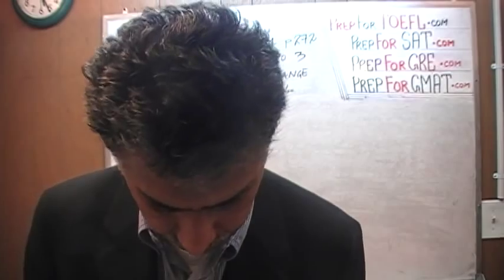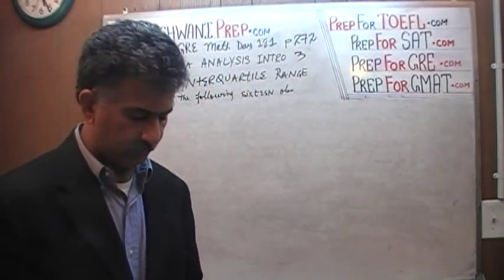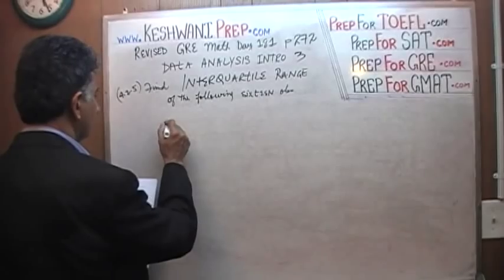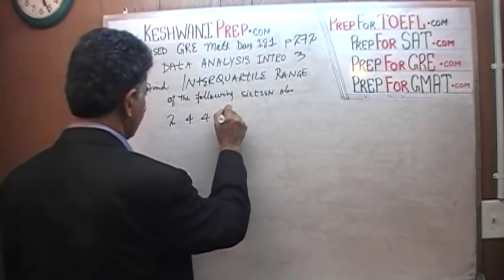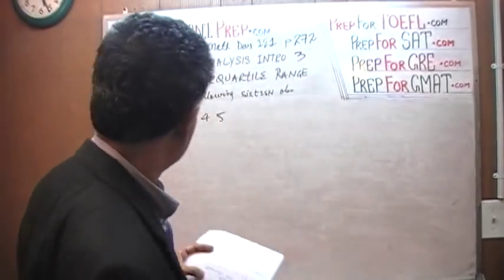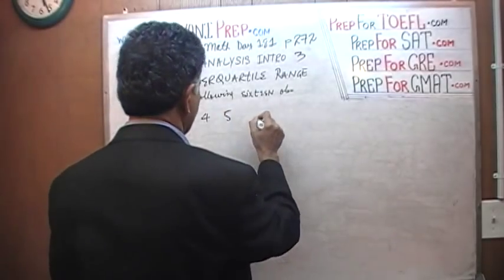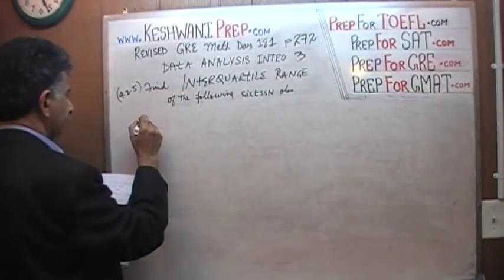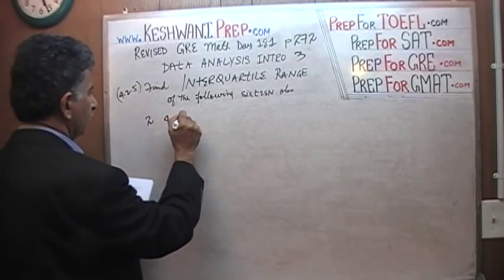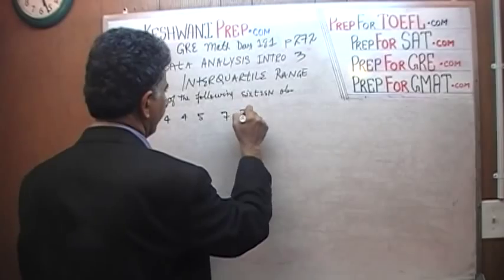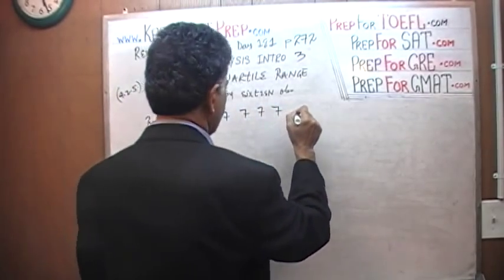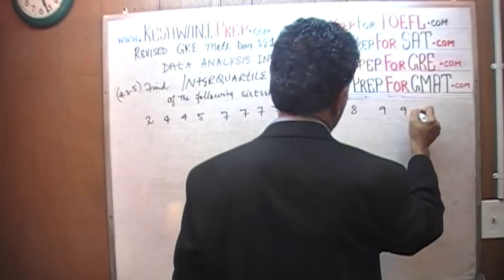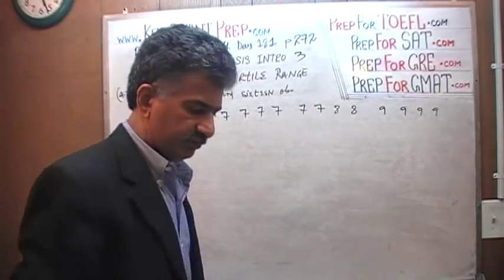We are given 16 observations and we are asked to calculate the interquartile range. What is the interquartile range for this set of data? The 16 observations are: 2, 4, 4, 5, 7, 7, 7, 7, 7, 7, 7, 8, 8, 9, 9, 9, 9. So 16 observations are given to us.